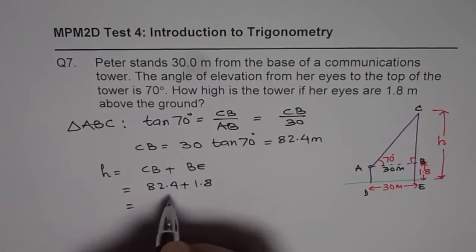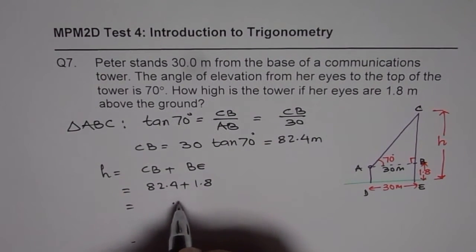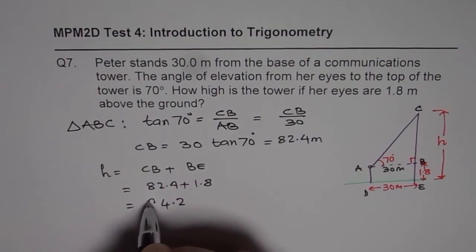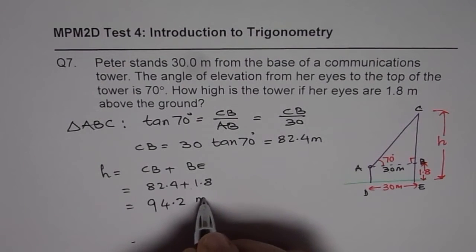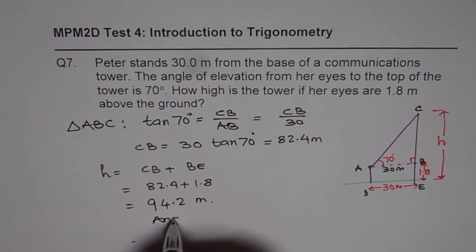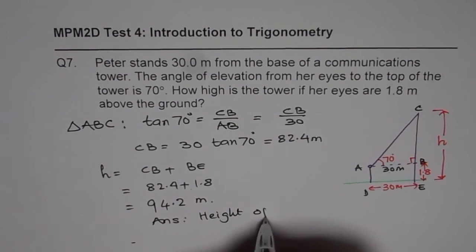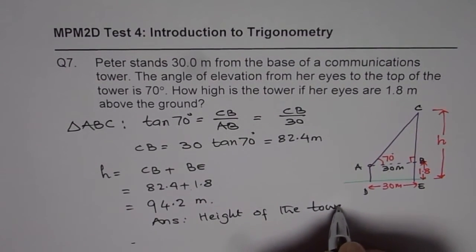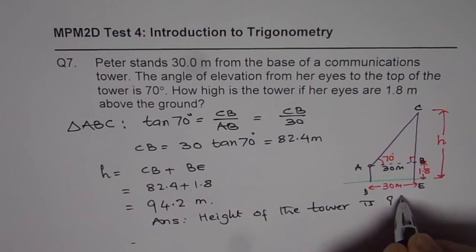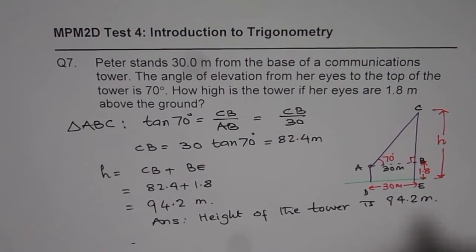So we can add them up and get the height of the tower. So 8 plus 4 is 12, carry 1, 2 plus 2 is 4, 8 plus 1 is 9. So we have 94.2 meters. And therefore, the answer is height of the tower is 94.2 meters.